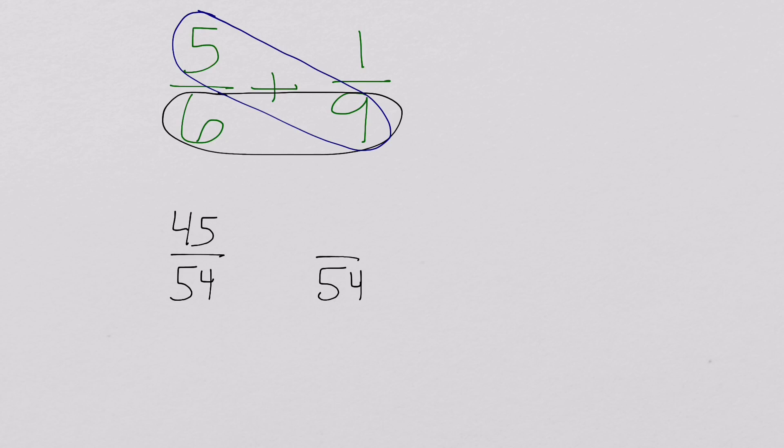And then cross multiply on the other side. So 1 times 6, which is 6. And since we used the numerator over here, it becomes the numerator down there.